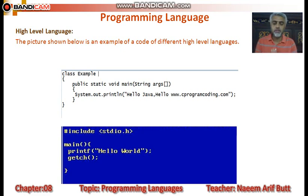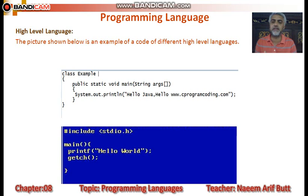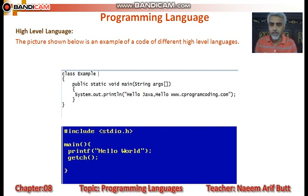سو ہم نے یہاں تک دو چیزوں کو discuss کر لیا ہے — ایک low-level languages اور ایک high-level language، with code examples۔ اب آپ آسانی سے بتا سکتے ہیں کہ کیوں machine language کو understand کرنا مشکل ہے اور low-level language میں programming مشکل ہے as compared to high-level languages۔ یہاں پہ جو چیزیں یاد رکھنی ہیں — define mnemonics، define syntax — یہ چیزیں اکثر board کے paper میں پوچھی جاتی ہیں۔